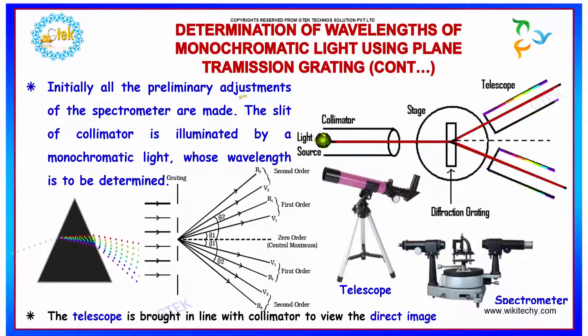Initially all the preliminary adjustments of the spectrometer are made. The slit of collimator is illuminated by a monochromatic light whose wavelength is to be determined.